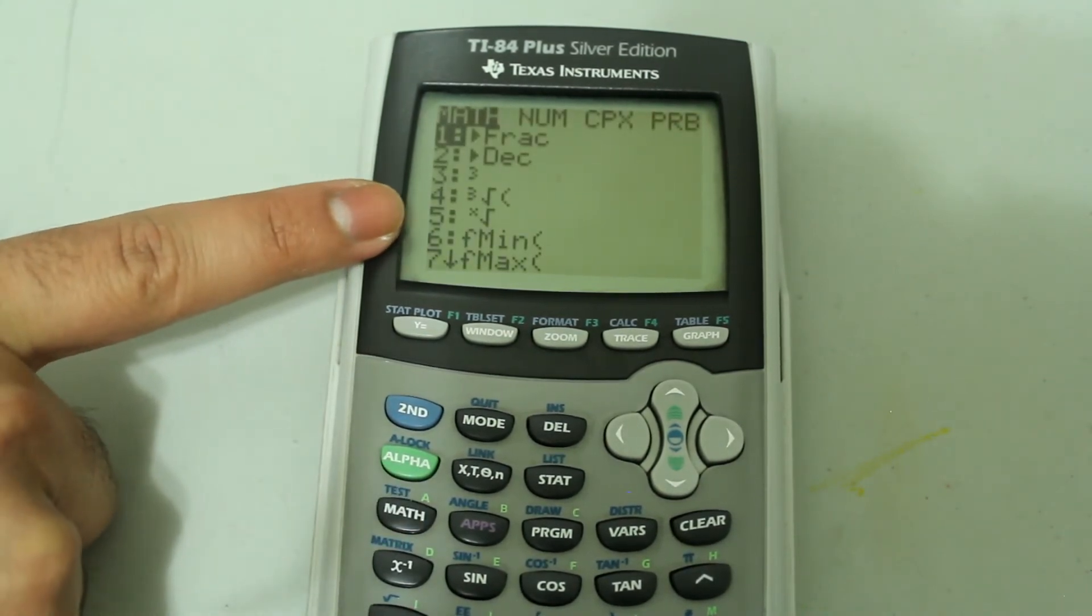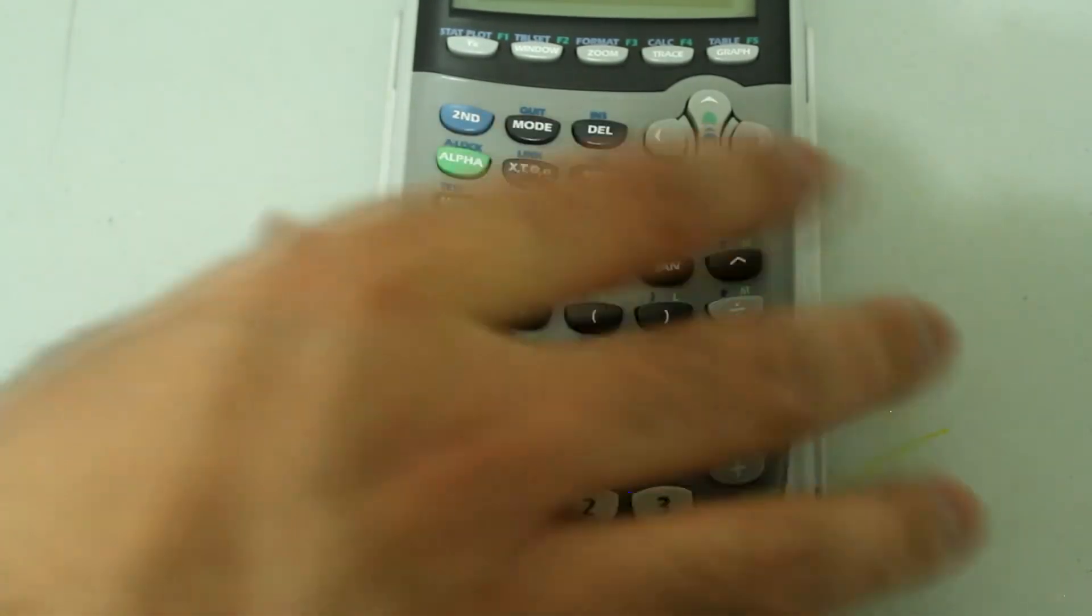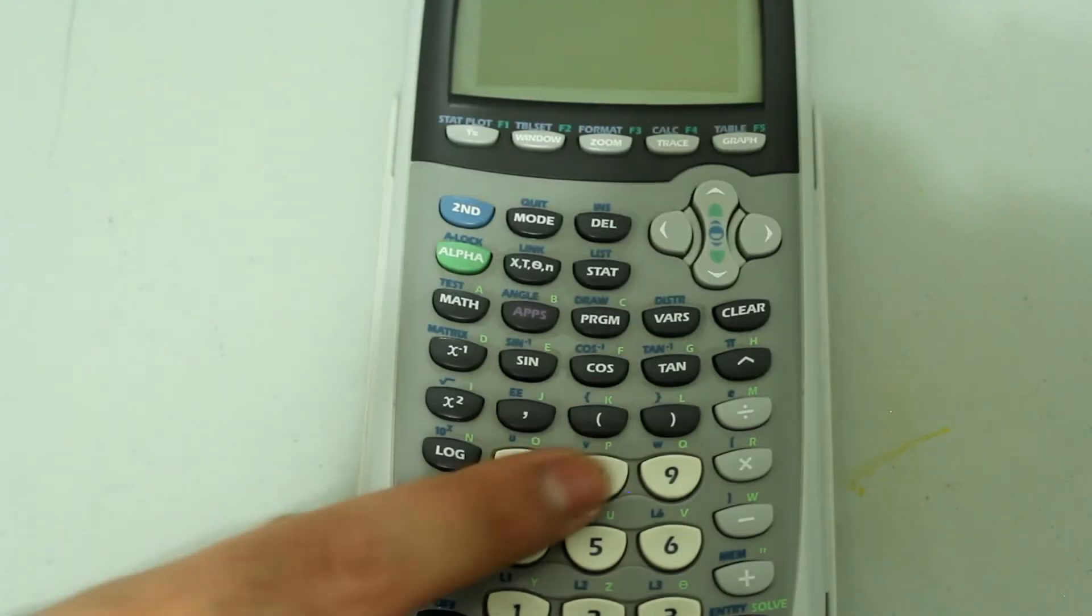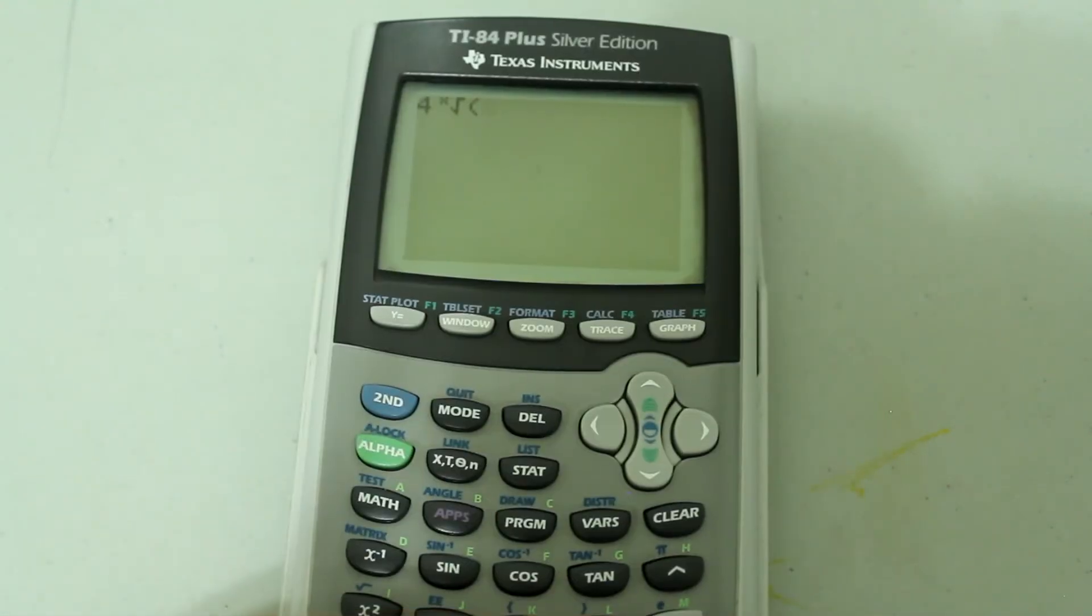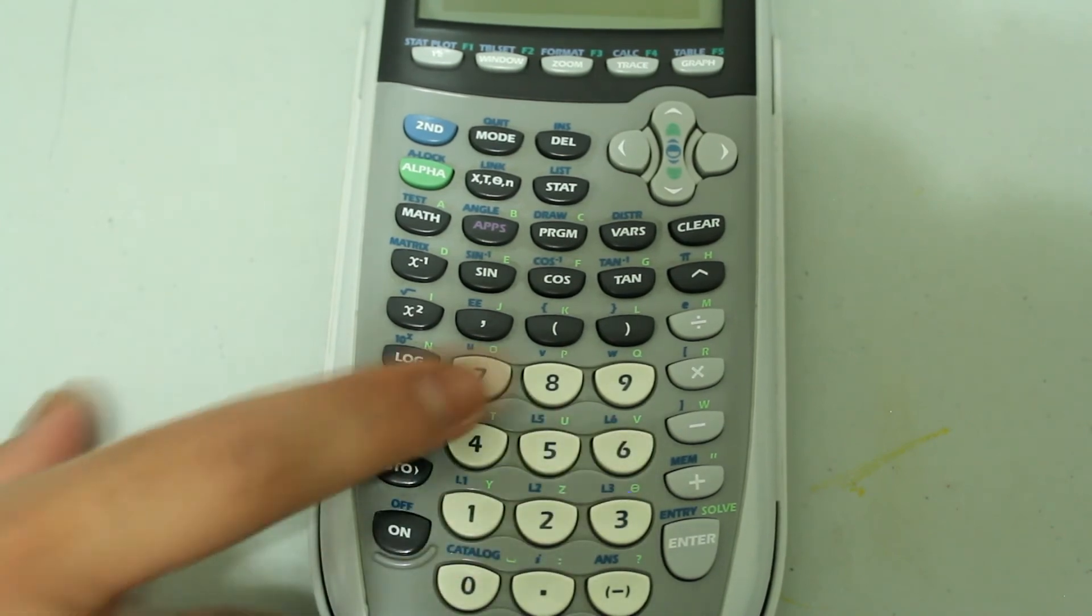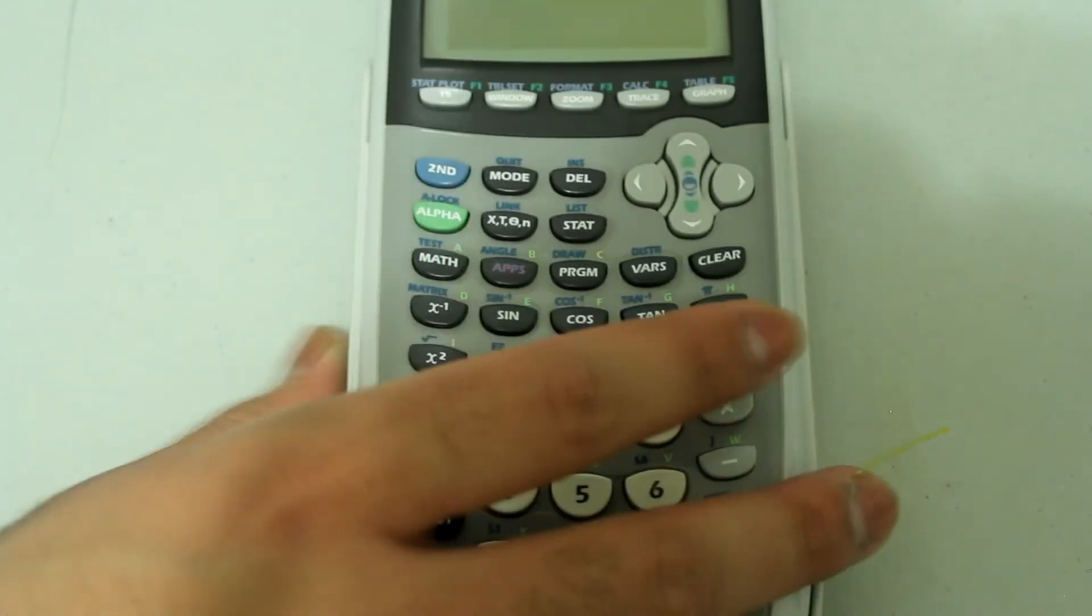So I'm going to press five on the number pad and this comes up. I'm going to open a parenthesis and then type in 256, close the parentheses. It looks like this.